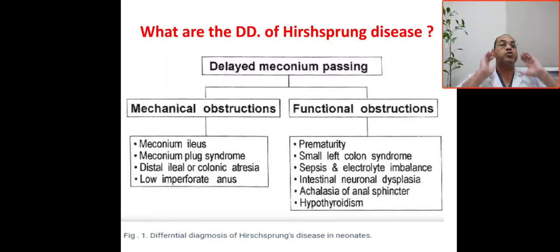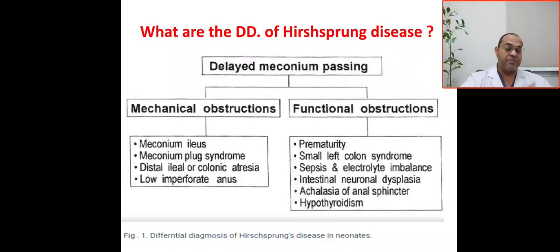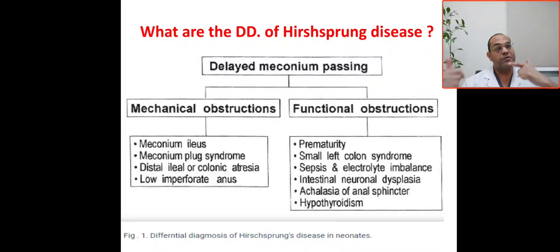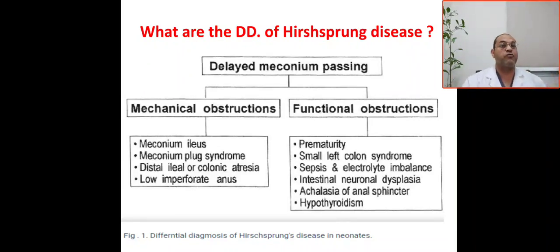Depending on gestational age, prematurity is commonly associated with delayed meconium passing. This is because of an immature gut with decreased motility and decreased peristaltic movement. So premature babies are liable for delayed meconium passing due to immaturity of the gut and decreased motility.